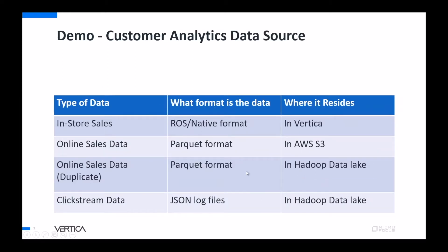This customer analytics use case has data sources from various locations. In-store sales are in ROS format — Read Optimized Storage — stored in Vertica. Online sales data comes in two sets, both in Parquet format: one stored in Hadoop Lake and the other in AWS S3. The third dataset is clickstream logs in JSON format, stored in the Hadoop Data Lake.